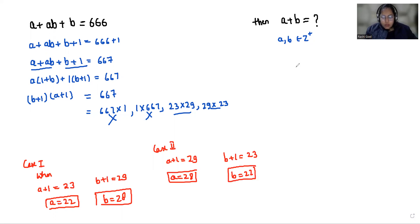So from case 1, the value of A plus B is 22 plus 28, that is 50, and we'll get the same value from case 2 as well. So the value of A plus B is 50.